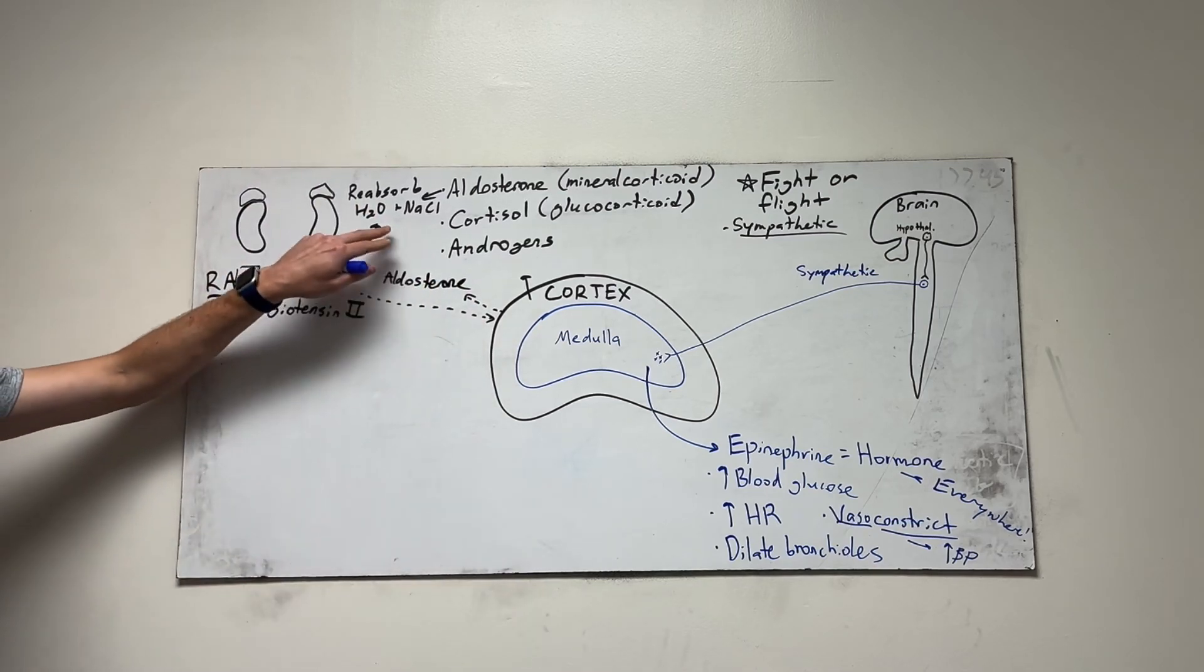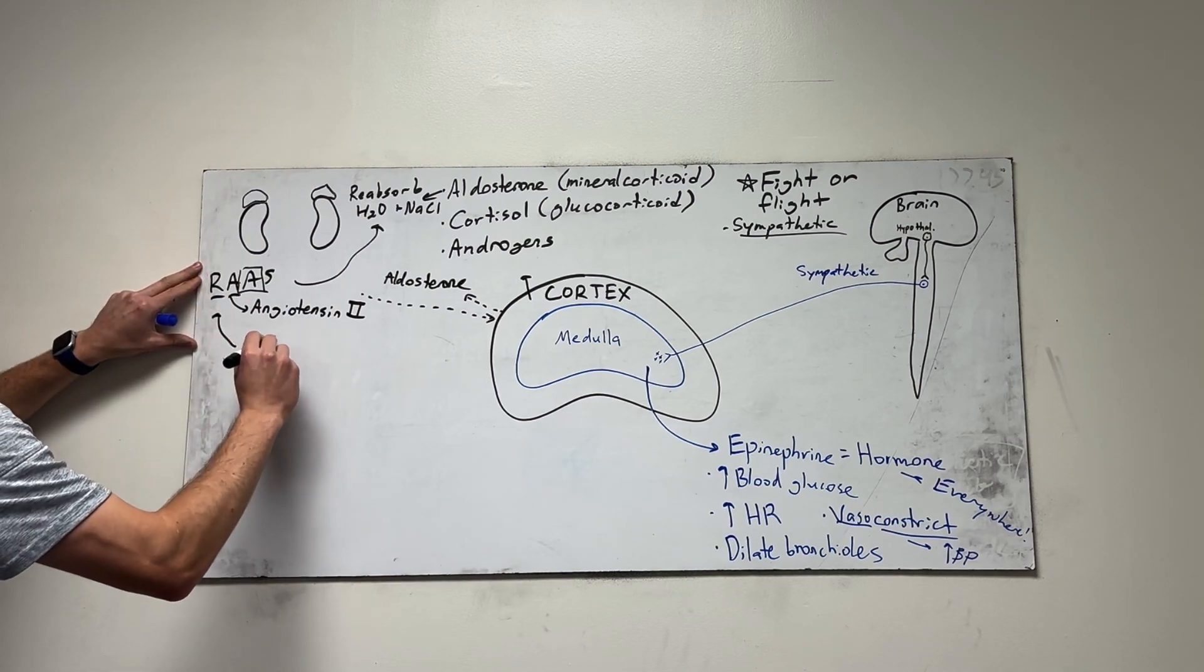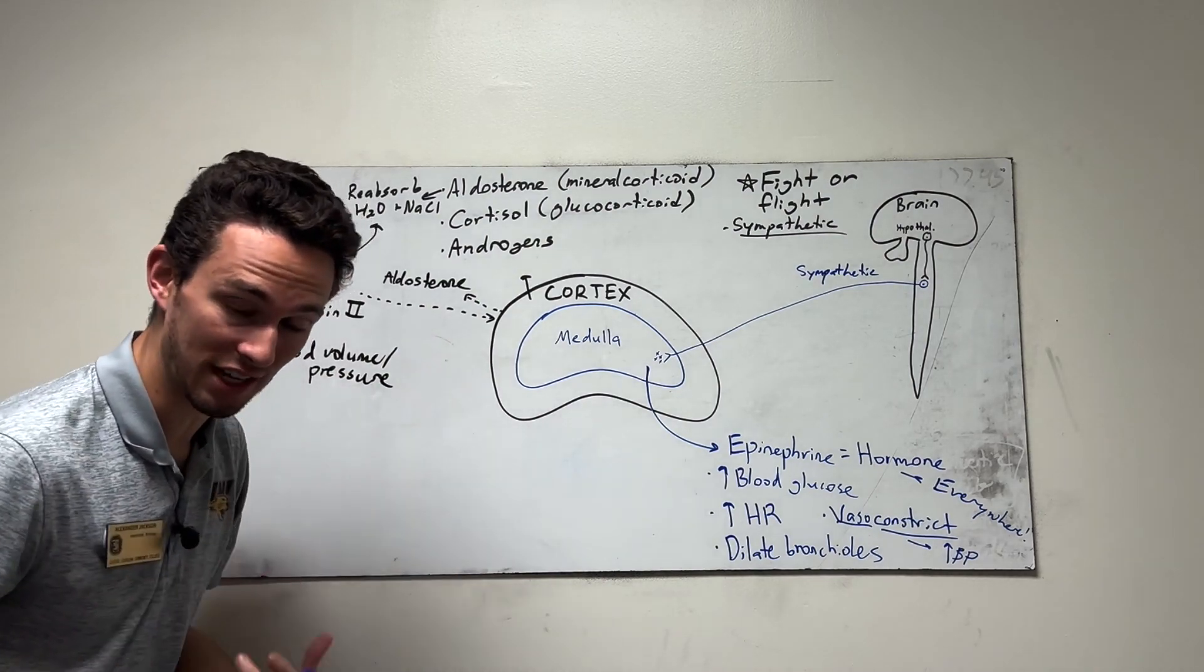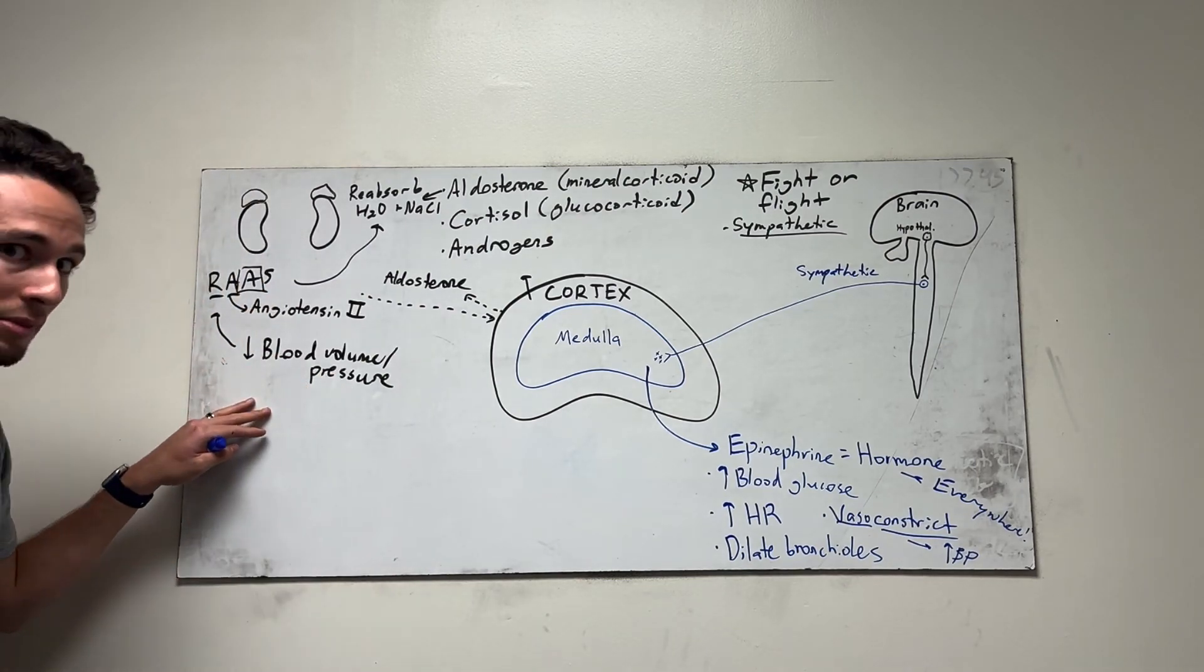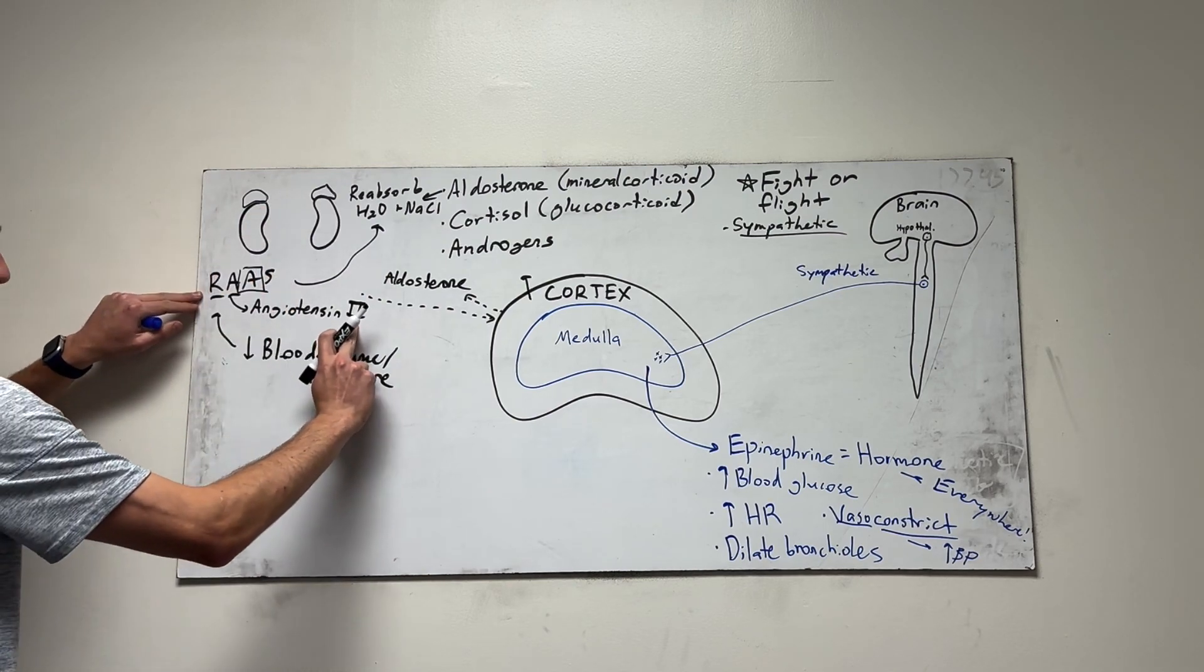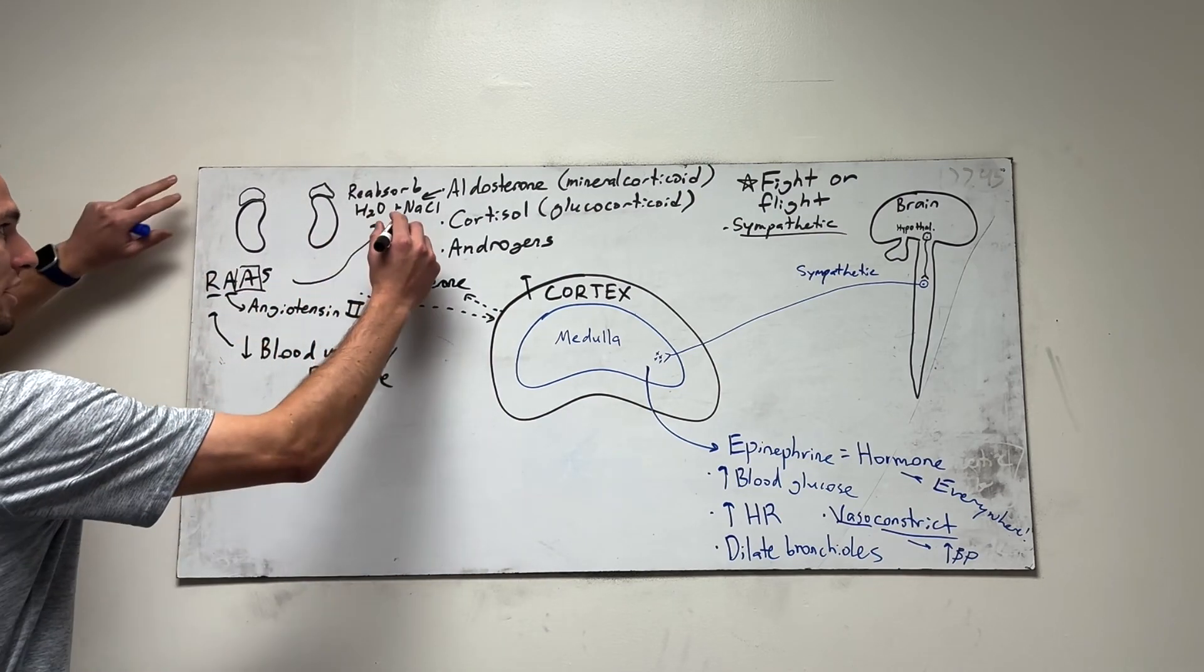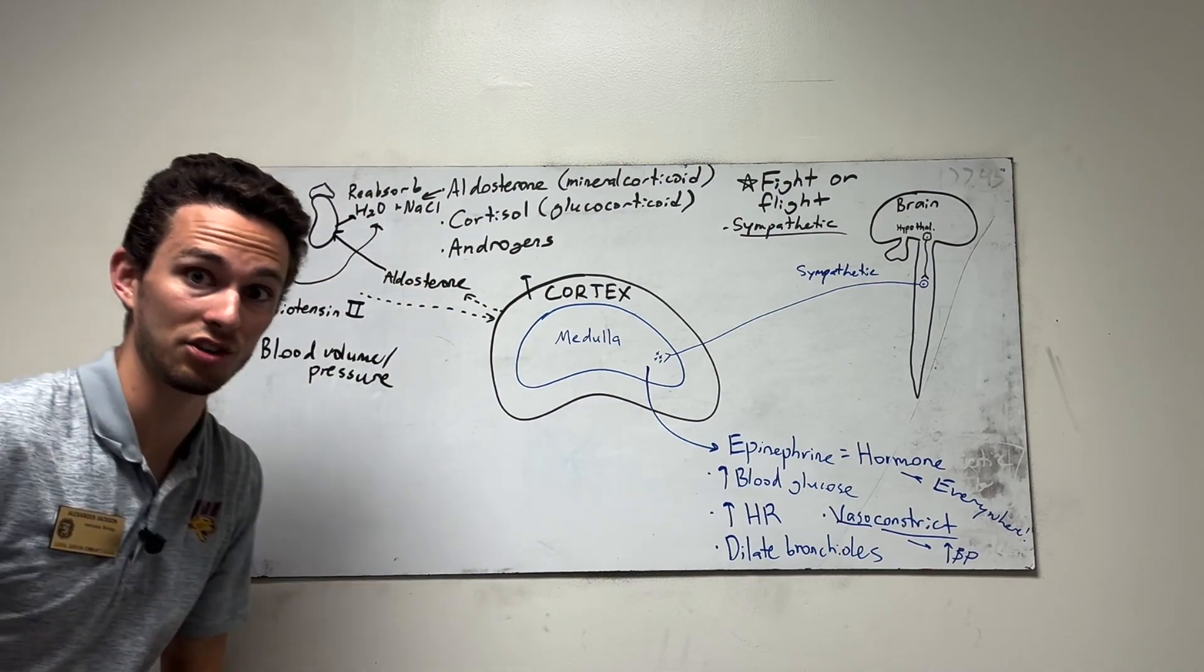But once again, the question is, why are we wanting to release aldosterone? Well, when is the RAS triggered? In response to low blood volume or low blood pressure. So what happened is we have low blood pressure. That's potentially dangerous. We could die from that. And the kidneys don't like to decrease their filtration rate, which is influenced heavily by blood volume. So in response, the kidneys release renin, renin does a whole slew of things, produces angiotensin-2, then tells the adrenal cortex, hey, release aldosterone so we can reabsorb water and salt because that will help increase our blood volume, right?